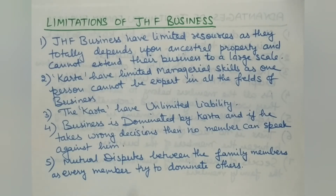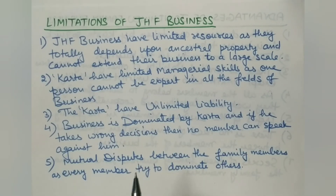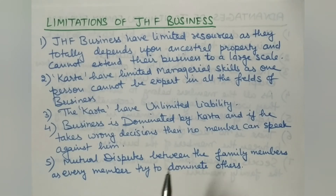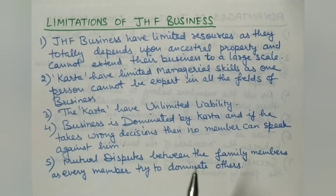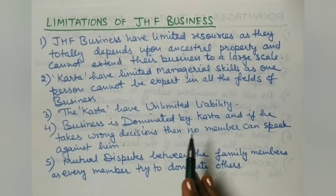There can also be mutual disputes between family members, as every member may try to dominate others. Family members may disagree about how the business is run, or some may wish to pursue separate careers or claim separate rights over property, leading to internal conflict. These are the main limitations of the Joint Hindu Family Business.